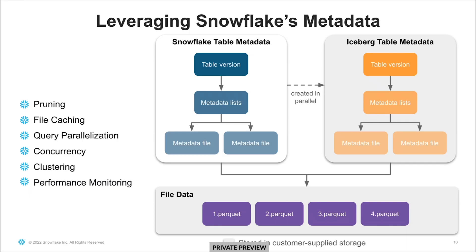Now that we've gotten to see what iceberg tables can do, let's talk about how they do it. Iceberg tables are fast. Let me show you how we built iceberg tables with performance on par with other Snowflake tables. Iceberg tables are just like other Snowflake tables, but they happen to persist their data in Parquet along with iceberg metadata on customer storage. Snowflake maintains our own metadata for iceberg tables — the blue boxes. We also generate iceberg metadata in yellow using our metadata. Both our internal metadata and the iceberg metadata point to Parquet data files in customer managed storage in purple.